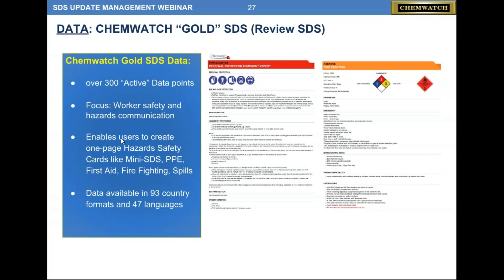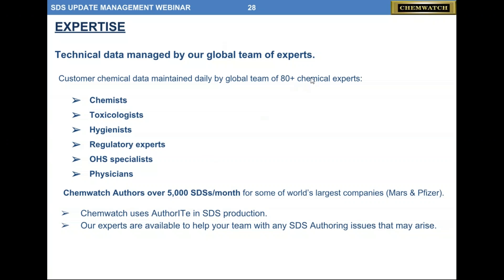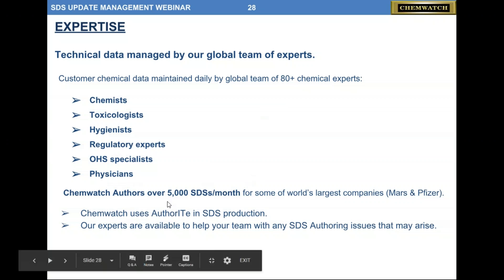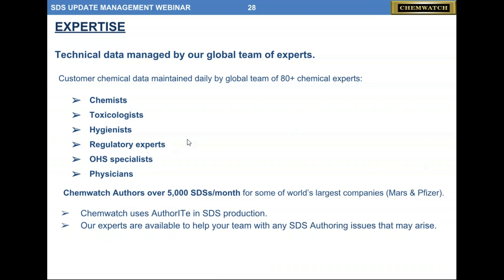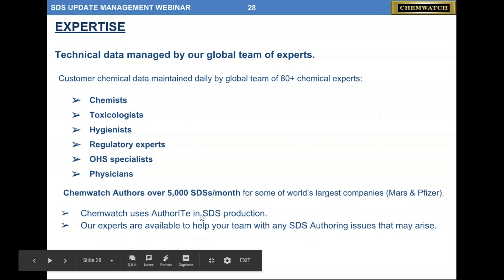With gold SDS, you can create individual PDFs called safety cards — really worker safety sheets covering PPE, first aid, and firefighting. You can create a one-page PPE document telling workers exactly what to do and how to do it, convertible to 47 languages. We have over 80 chemical experts — chemists, toxicologists, hygienists, regulatory folks, even a couple of doctors on staff — and author about 5,000 documents a month independently for some of the world's largest companies.